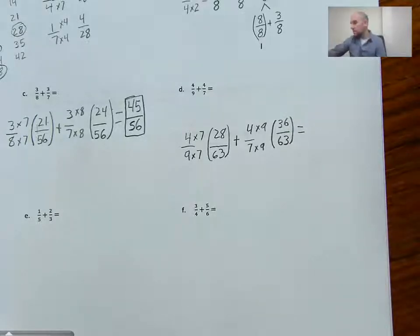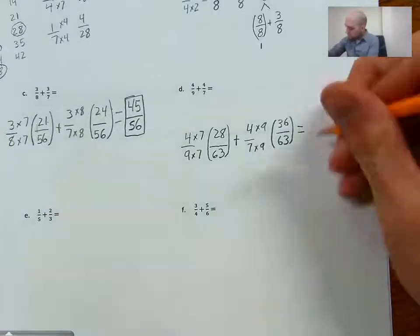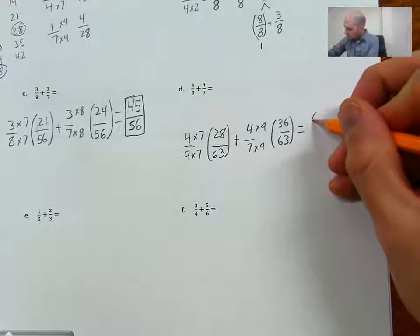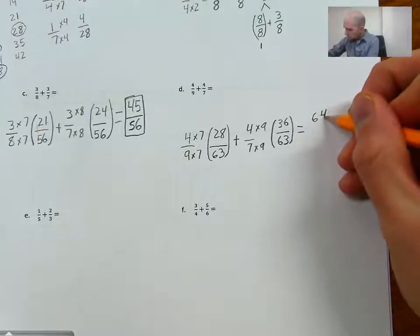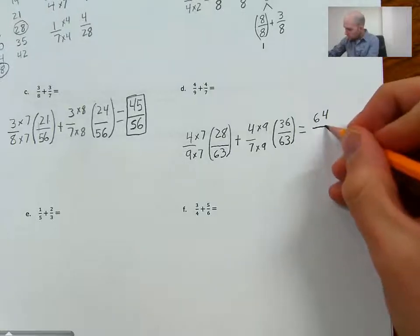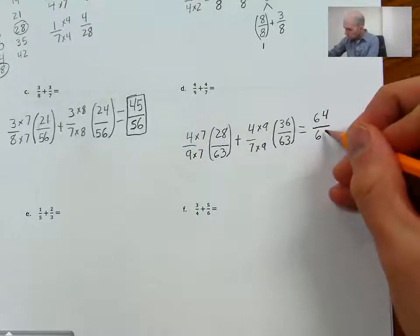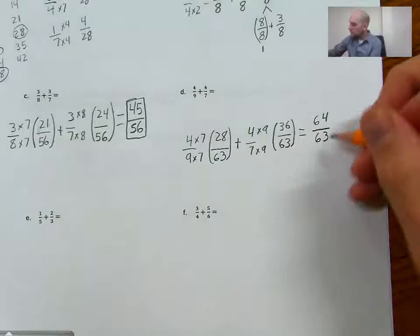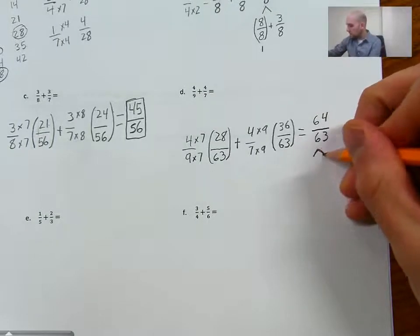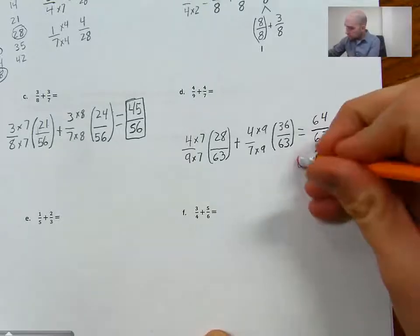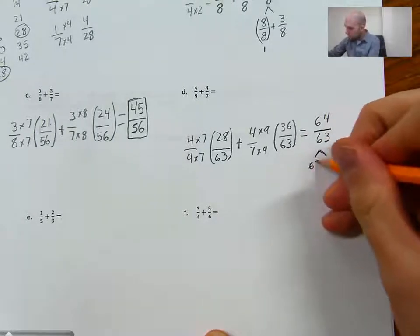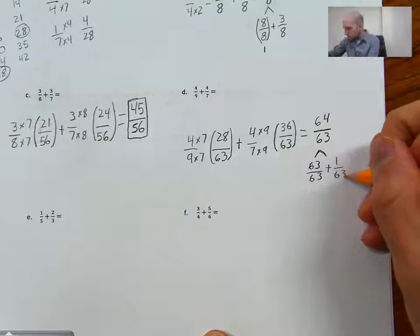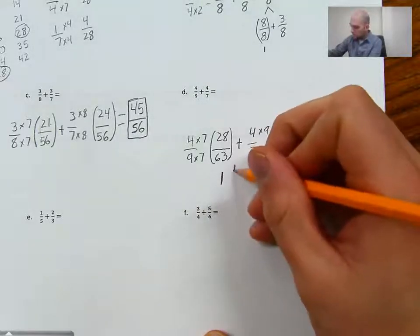So if I do 28 plus 36, I'm going to get 64. And then on my numerator, I'm going to get 63. So I have 64/63. Don't love the way that looks. I'm going to have to make that into a mixed number. Well, I can do 63/63 plus 1/63. I'll end up with 1 and 1/63.